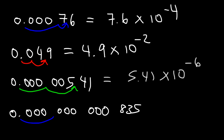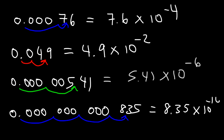And for the last small-number example, moving 10 units to the right, this is going to equal 8.35 times 10 to the negative 10. Now you know how to convert a number in decimal notation or standard notation into scientific notation.